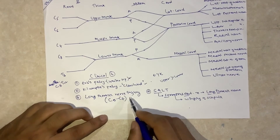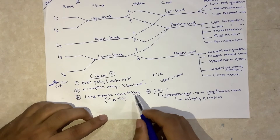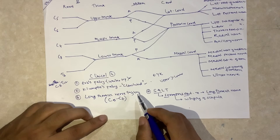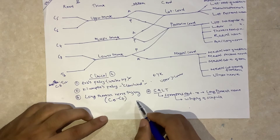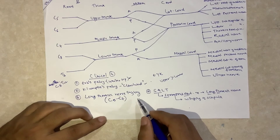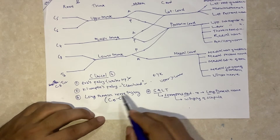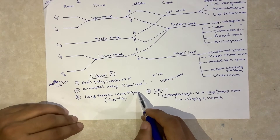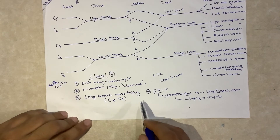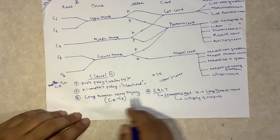A high-yield point frequently asked in exams related to the long thoracic nerve: if a female undergoes axillary node dissection after mastectomy, the common nerve that is injured is the long thoracic nerve, which results in serratus anterior paralysis.